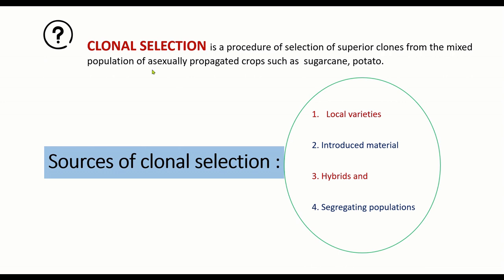The sources for clonal selection — from which we are going to select — can be local varieties, which are popular cultivars that farmers have been cultivating as traditional varieties for a long time. It can be introduced material which has been successful when introduced into a new environment and domesticated. A hybrid plant may also be a good source for clonal selection, provided the hybrid yields well.